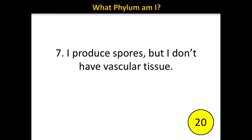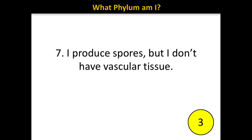Number seven: I produce spores, but I don't have vascular tissue. The correct answer is Bryophyta — the mosses.